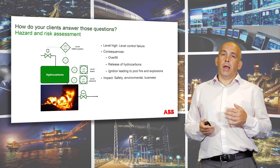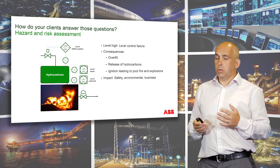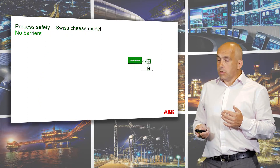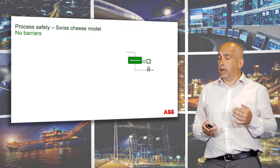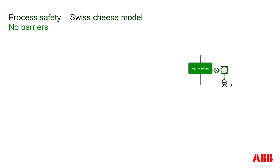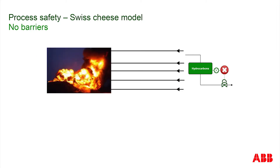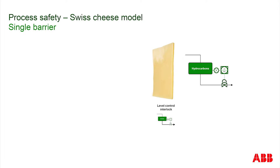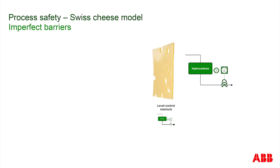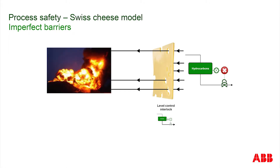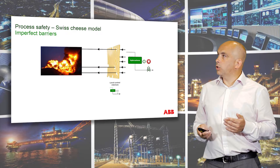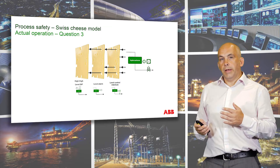That's how our customers answer the first two questions. To explain what goes wrong in operations, we're going to use the Swiss cheese model. If we didn't have any barriers and we had a failure on the level controller, it would lead to the incident. So we put in place a barrier — in this model, we're calling that barrier a slice of cheese. Unfortunately, barriers aren't perfect; they've got holes in them, hence Swiss cheese. That's why we never rely on a single barrier. We put in place multiple barriers so no single failure can lead to the event.